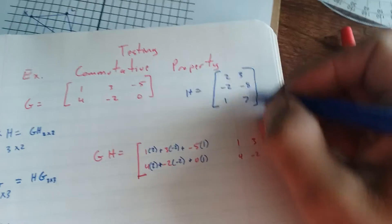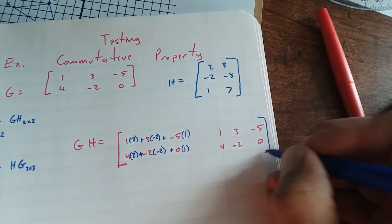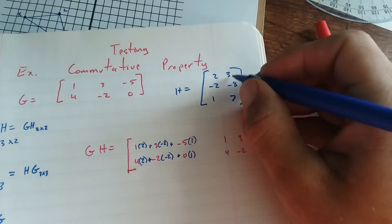And then my second column goes in my second column here. So it's going to be 3, negative 8, 7.